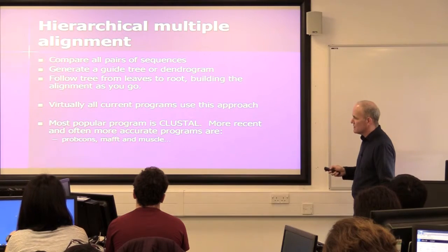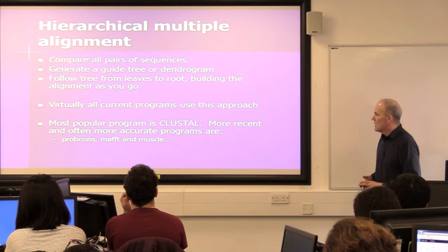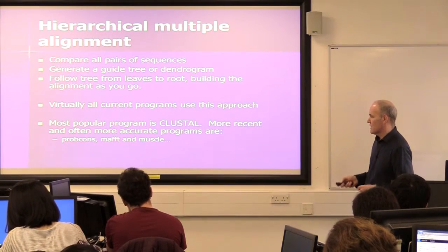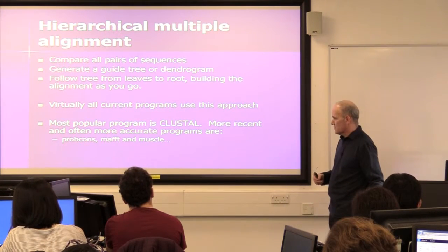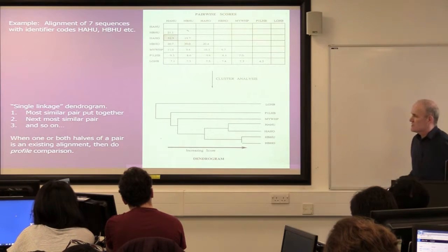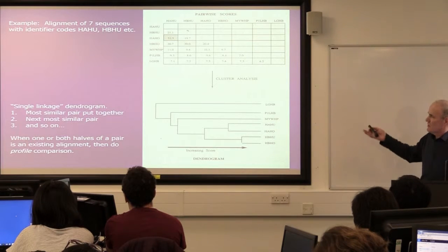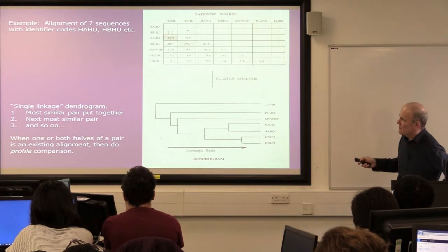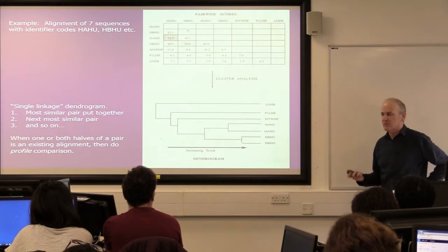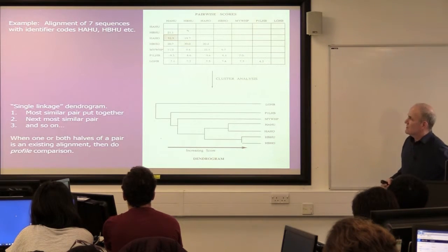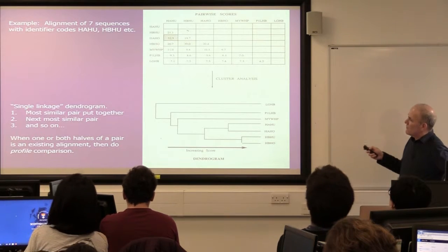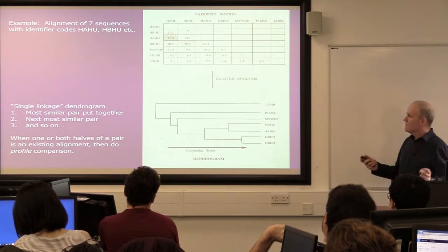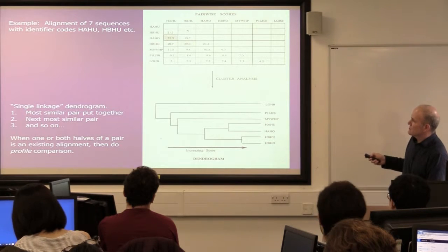Let me show an example with seven globin sequences — haemoglobin alpha and beta from different species, myoglobin, leg haemoglobin, lamprey. You compare them pairwise and calculate a similarity score using dynamic programming. Then you do cluster analysis: find the biggest number in the table — HBHO against HBHU — those are the most similar pair, so put them together in the dendrogram. Then find the next biggest number — HAHU against HAHO — put those together. Once you put them together, you keep them together, and you carry on that process.